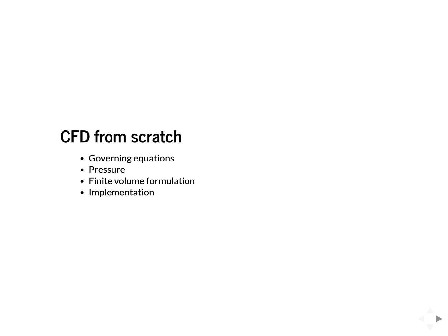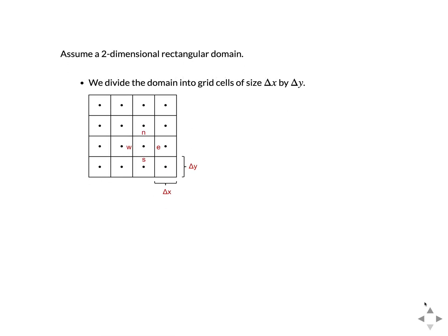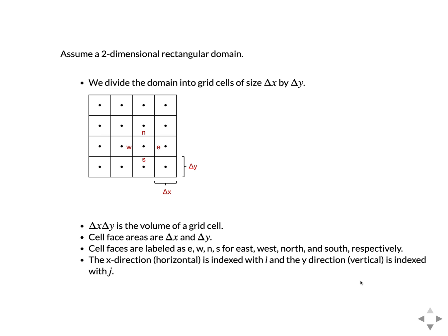Continuing our series on CFD from scratch, having covered the governing equations and pressure, this video discusses the finite volume formulation. We assume a two-dimensional rectangular domain and divide that domain into a computational grid where each grid cell has a size dx by dy.